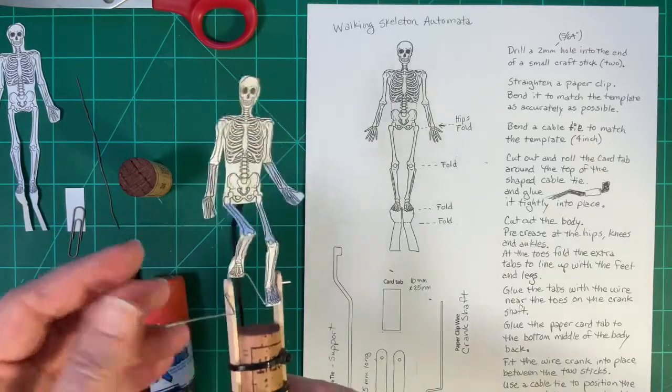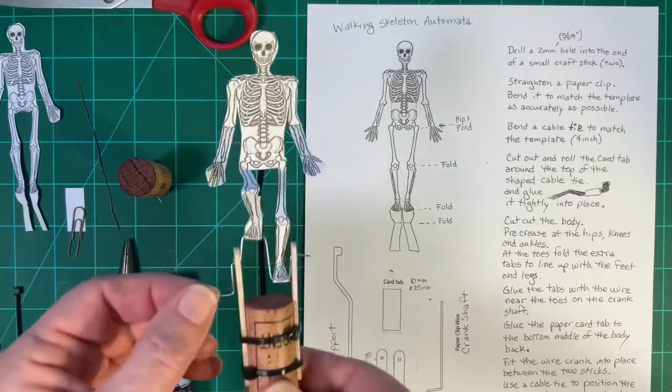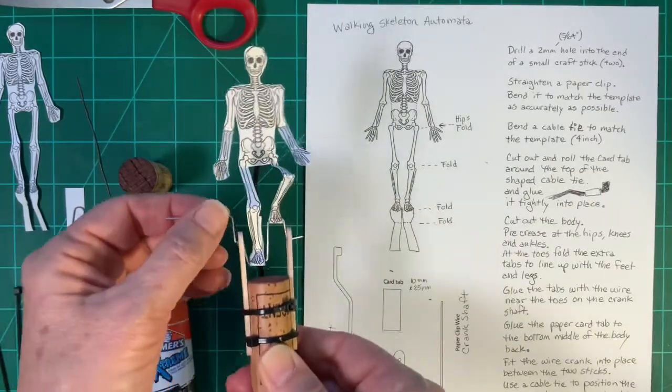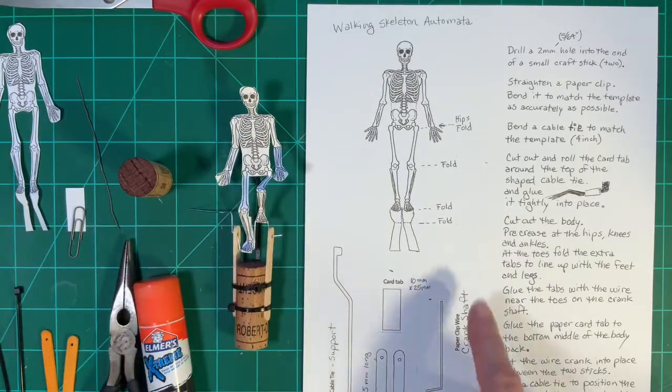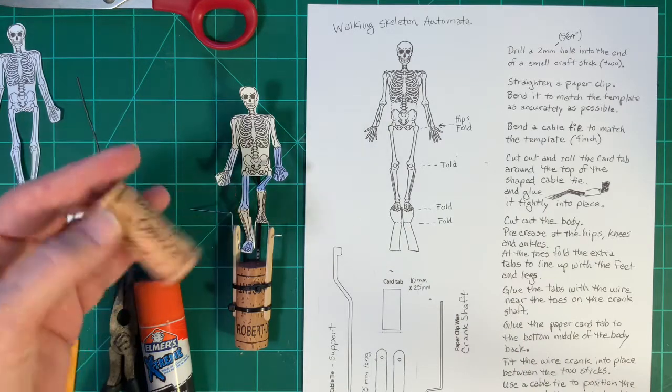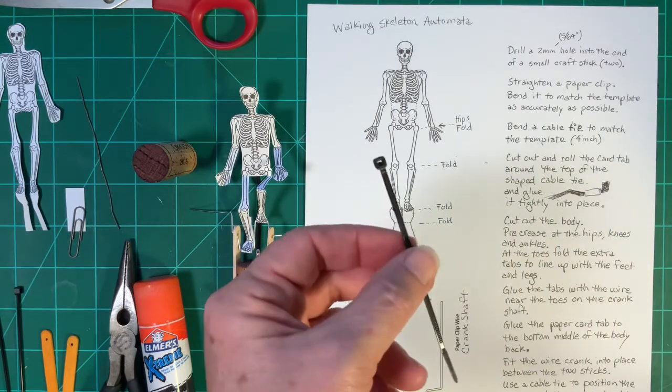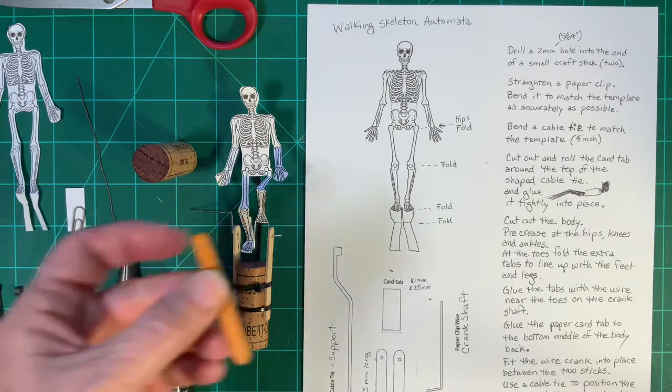How to make a walking skeleton automata. You will need this paper, cork, three zip ties that are four inches long, and two small craft sticks.